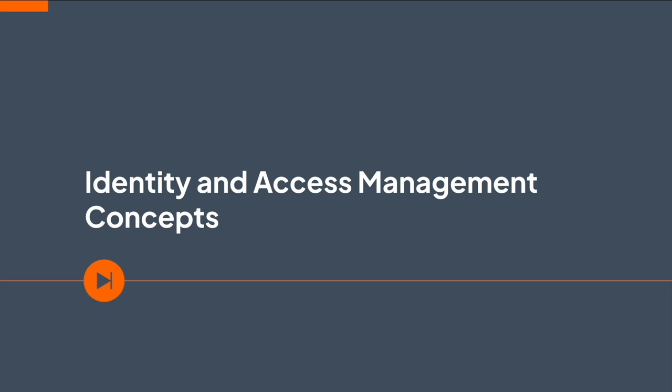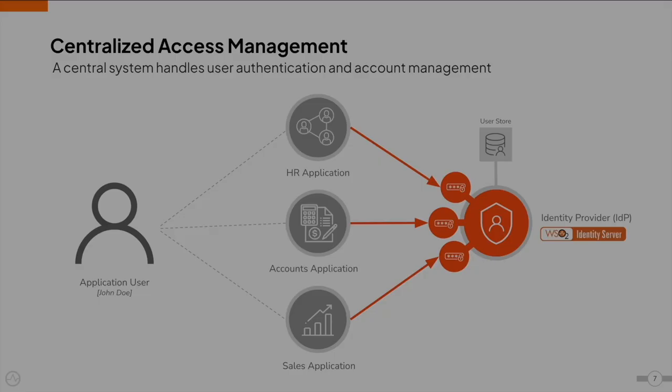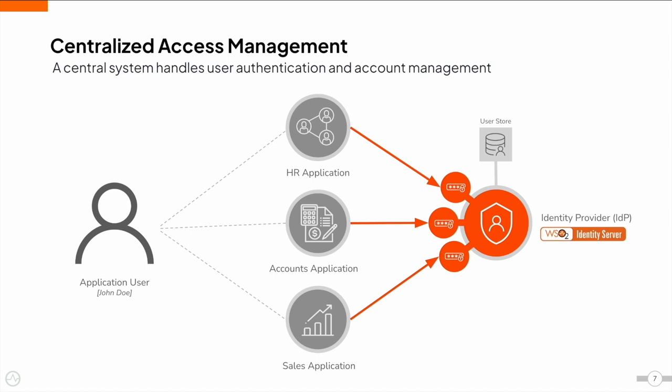Modern identity and access management is increasingly aligned with business needs and helps to overcome these challenges. Centralized Access Management and Access Control involve users being managed within a single component called the Identity Provider, or IDP. All applications trust the IDP and users log into applications through the IDP. This eliminates the need for multiple passwords and the need to manage identities at the application layer. If you want to introduce a new application, you can simply integrate it with the IDP and it will manage user identities on behalf of your application.